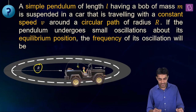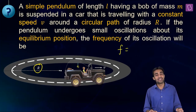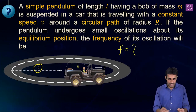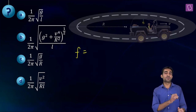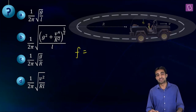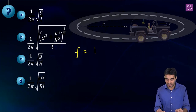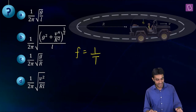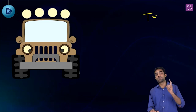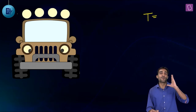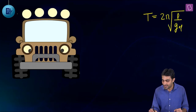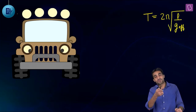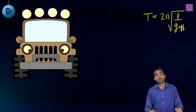Frequency is the number of oscillations per second, given by 1 divided by the time period. The general formula for time period is 2π under root L by G_effective. Notice that instead of G, we write G_effective.